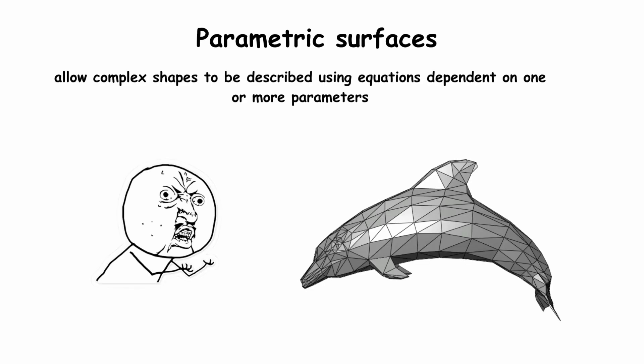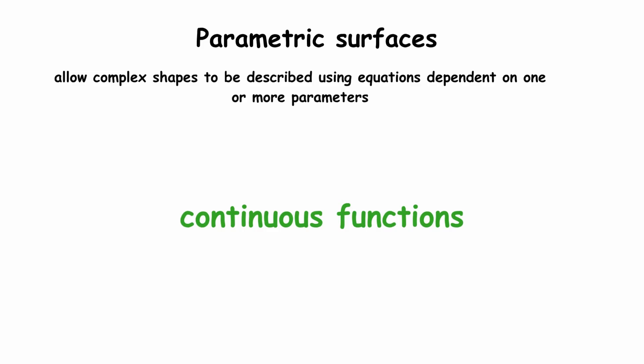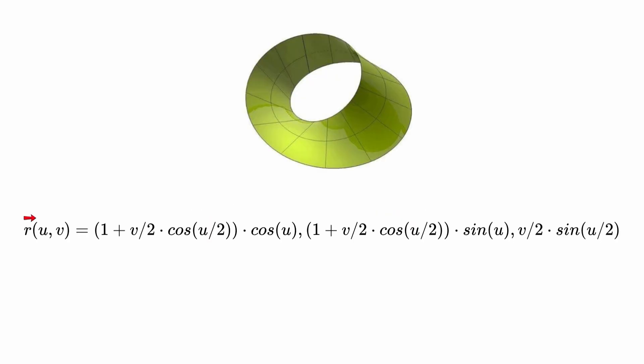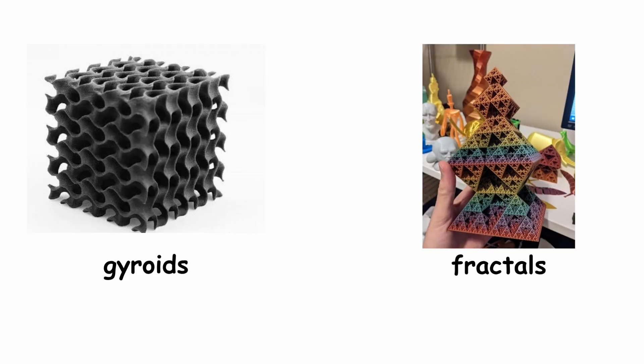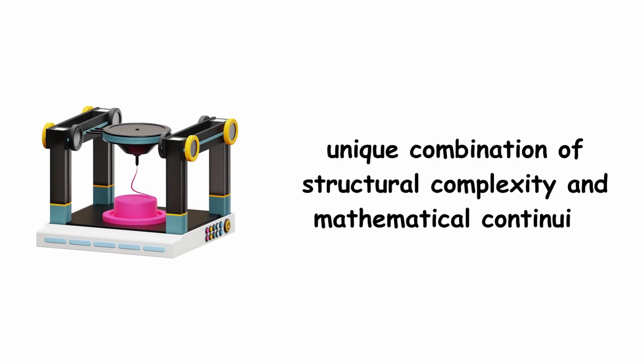Parametric surfaces allow complex shapes to be described using equations dependent on one or more parameters. Unlike polygon-based models, these surfaces are defined by continuous functions. For example, a Mobius strip can be represented where U and V are parameters within certain ranges. These representations allow the creation of geometries such as gyroids, fractals, and algebraic surfaces, widely used in advanced 3D printing due to their unique combination of structural complexity and mathematical continuity.